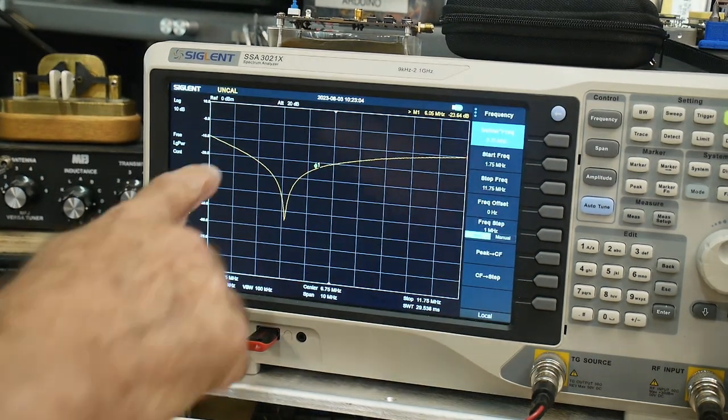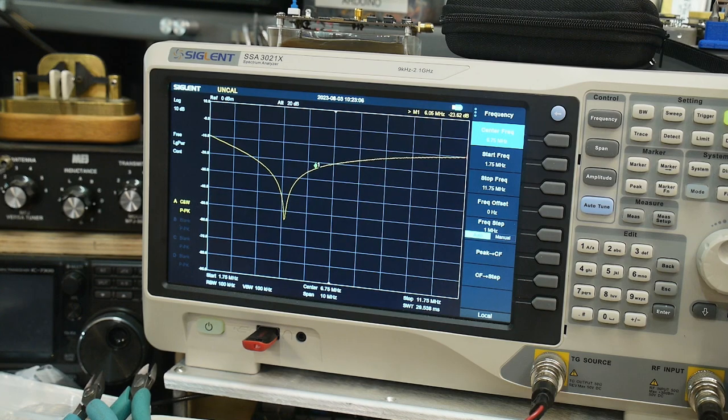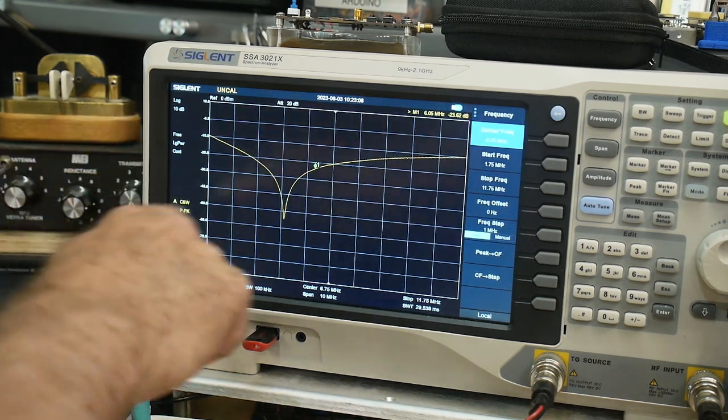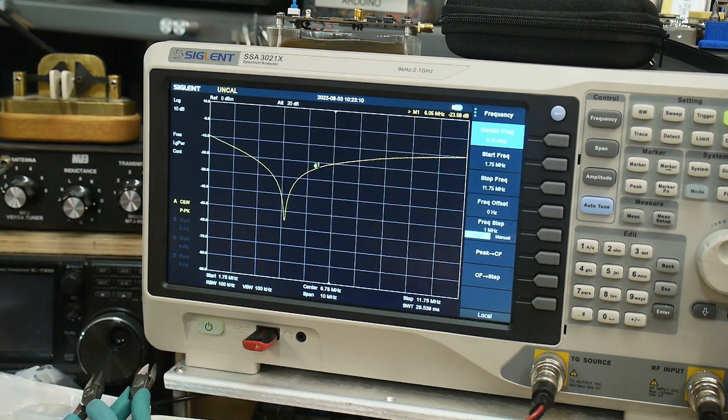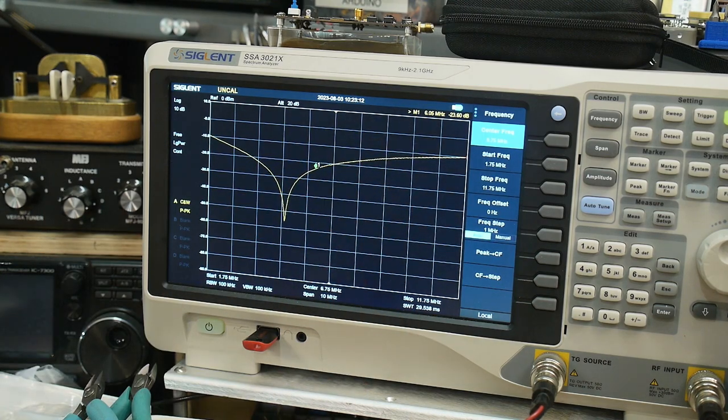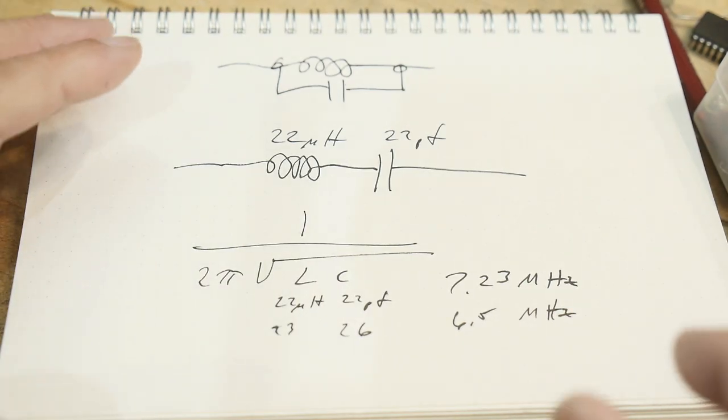Let's hook that up to our machine. All right, there we go. Now we have a dip. So the series circuit gave us a peak and the parallel circuit gave us a dip.